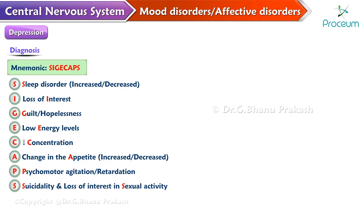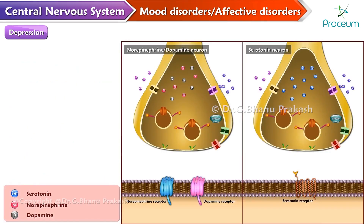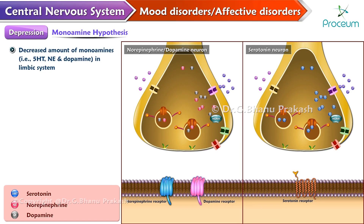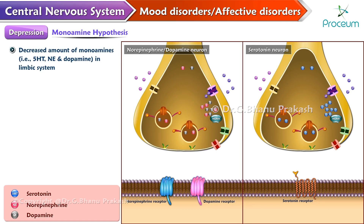At least five of the nine symptoms, if present for at least a period of two weeks or more, then the patient is classified to have major depression. Now let's talk about the monoamine hypothesis. In patients of depression, there is a decreased amount of monoamines like serotonin, norepinephrine, and dopamine in the limbic system.